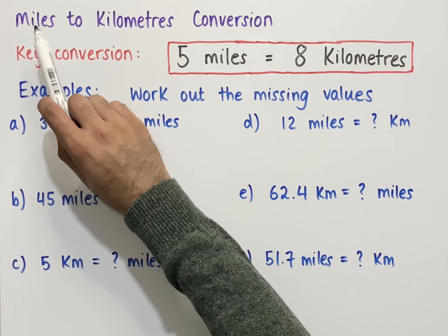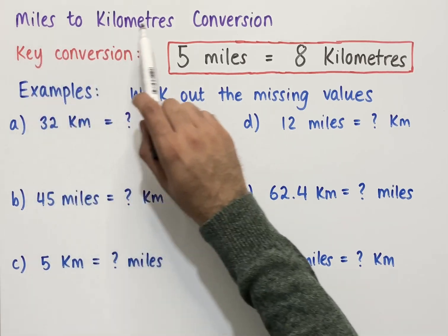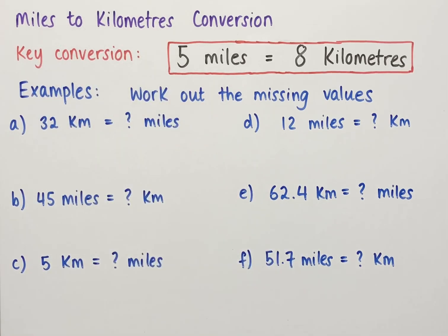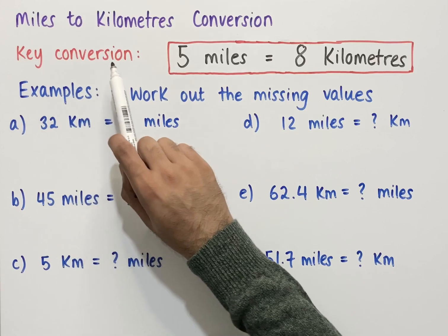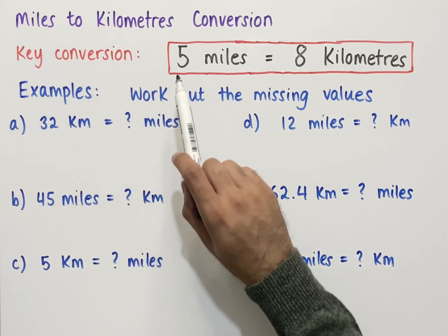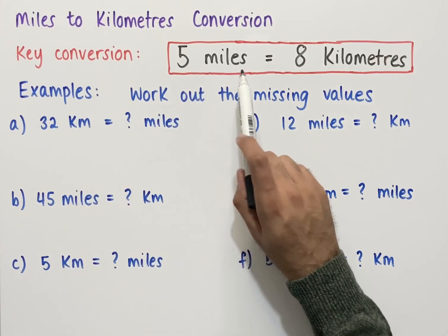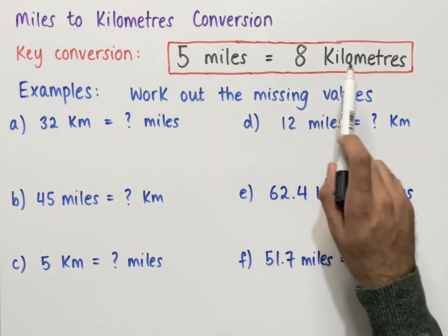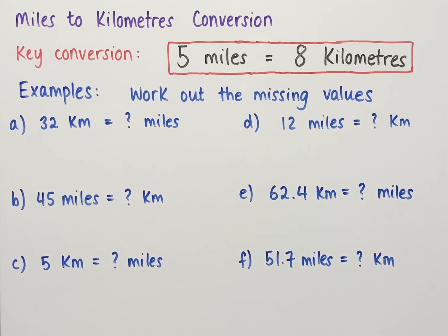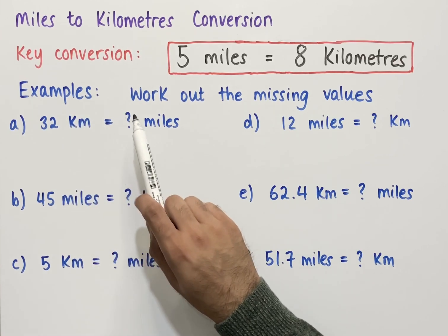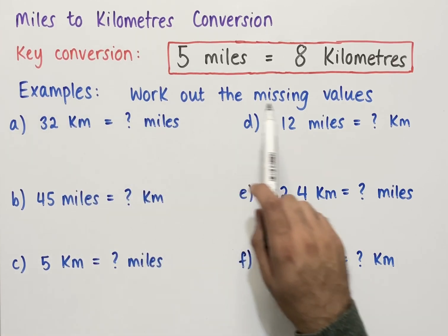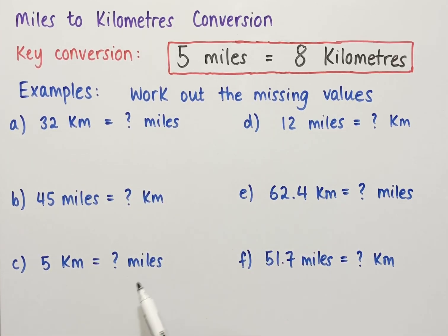Let's look at how to convert from miles to kilometers and vice versa. The key conversion we need to know is that 5 miles equals 8 kilometers. We've got some examples where we're going to work out the missing values in each of these questions.